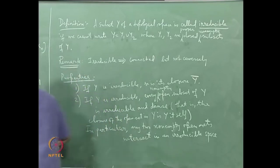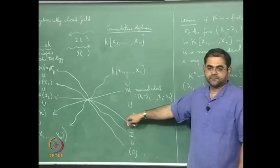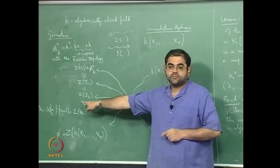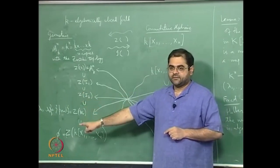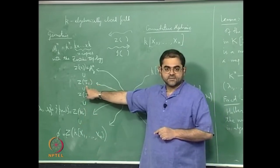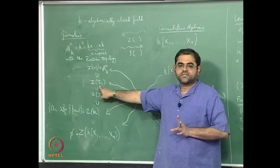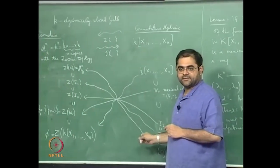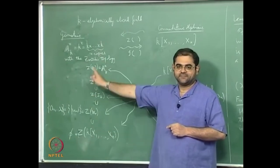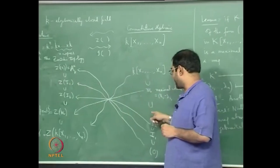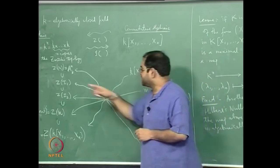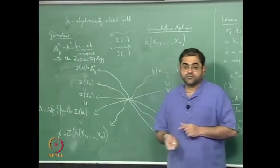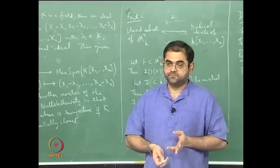Coming back to the question: if you start with a prime ideal, what do you get on the geometry side? If you start with a prime ideal, the zero set will be an irreducible closed subset. Conversely, if Z(I) is an irreducible closed subset, then the radical of I must be prime, and if I is already radical then I must be prime. So prime ideals correspond to irreducible closed sets.